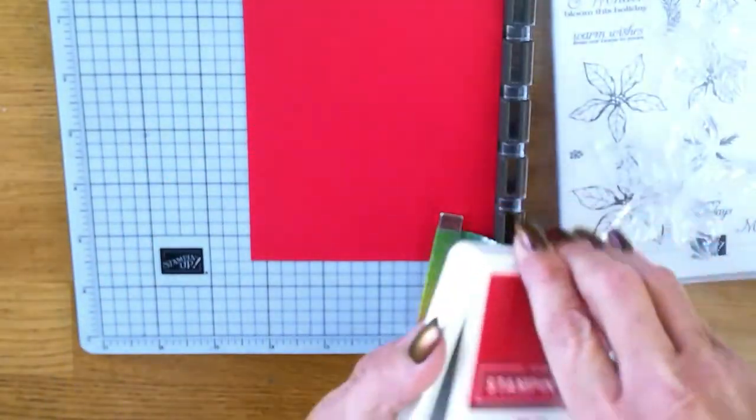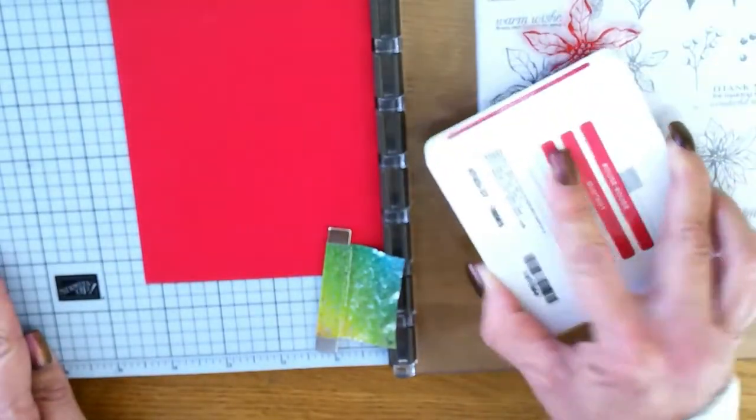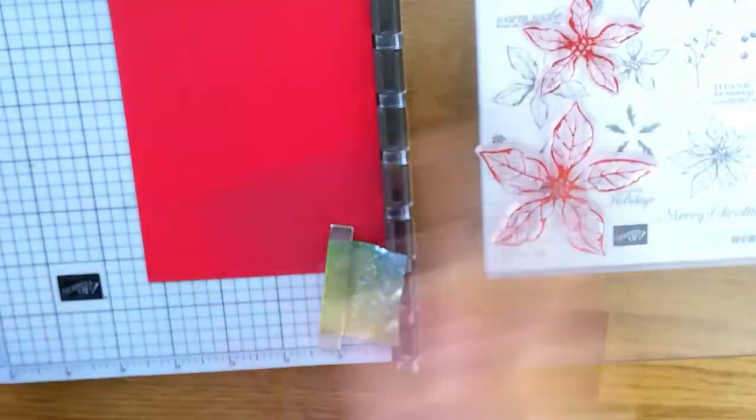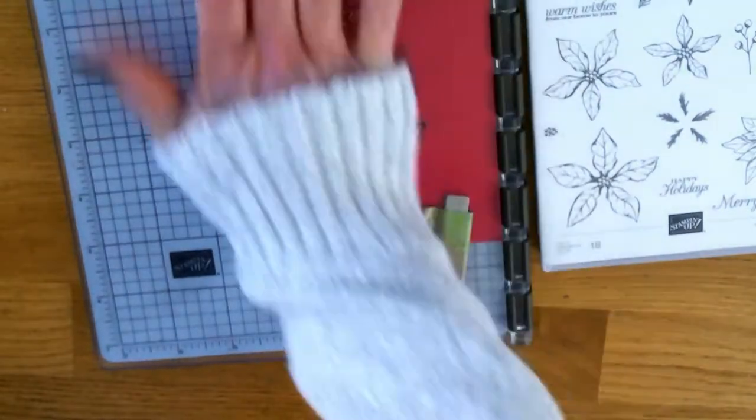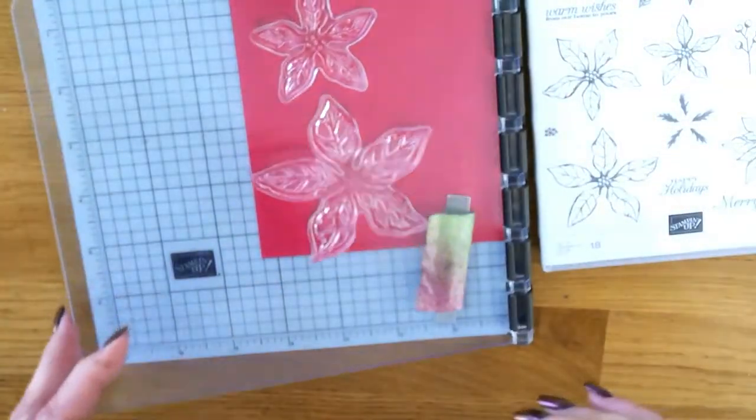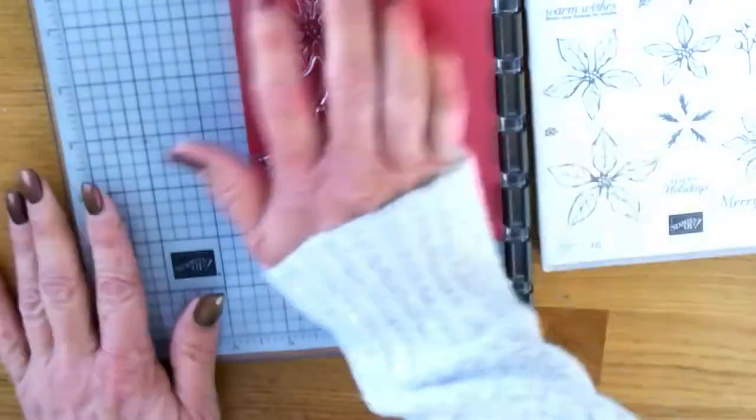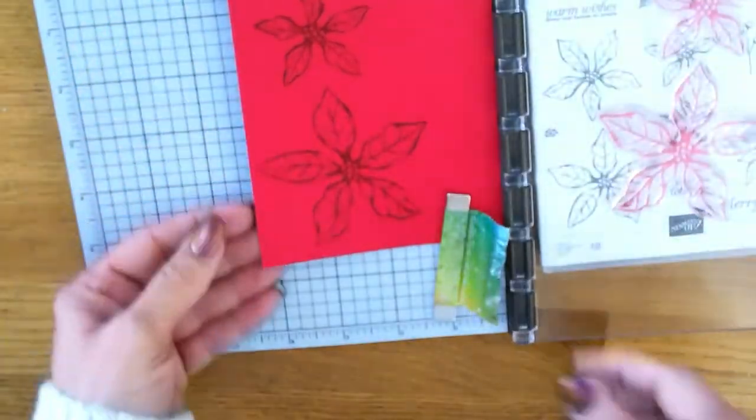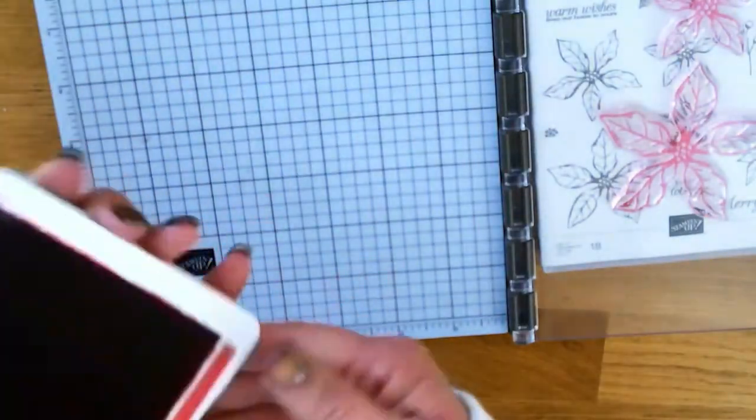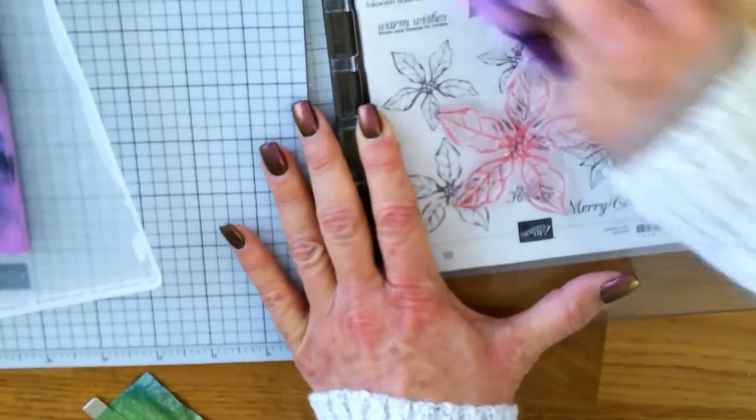I'm laying down the largest one and the smallest one into my Stamparatus. I want to get them inked up with our Real Red ink and get some good coverage, then lay that down. I use my sleeve a lot to rub everything down, especially in the wintertime. I wanted it a little bit darker, so I inked it up another time. Another idea with this is to take a red watercolor pencil and blend it out.